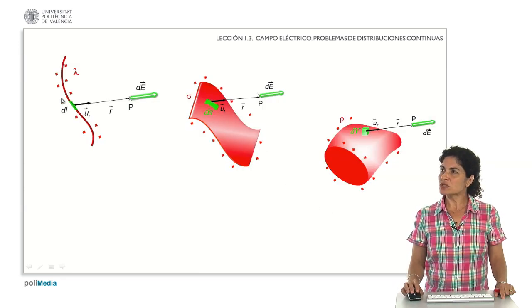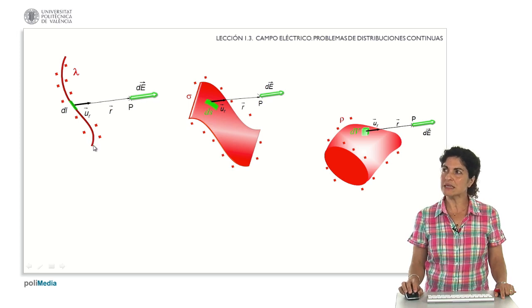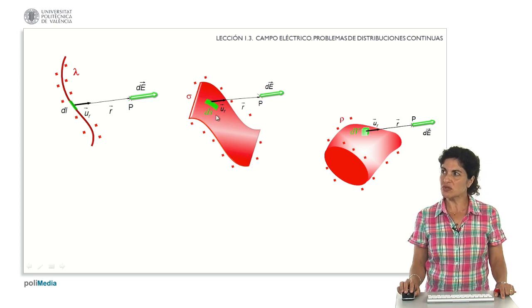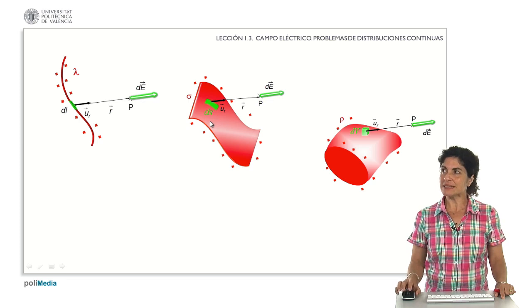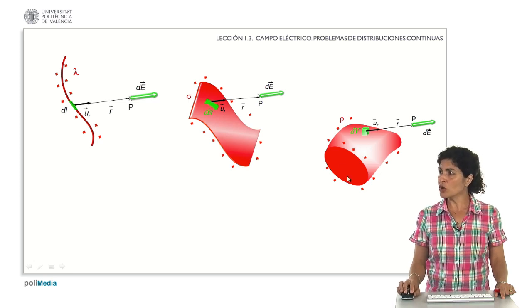We have to remember that as continuous systems of charge we can have different types of charge distributions: a longitudinal distribution as shown here with an arbitrarily shaped wire, or a surface distribution where we must consider two dimensions and different surface differentials, or a volume distribution as an arbitrary representation.